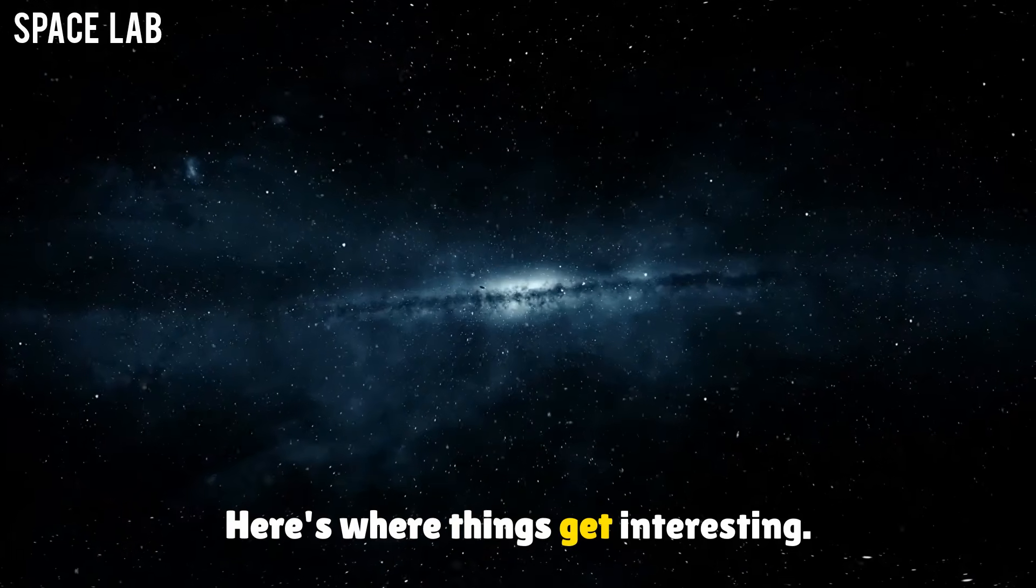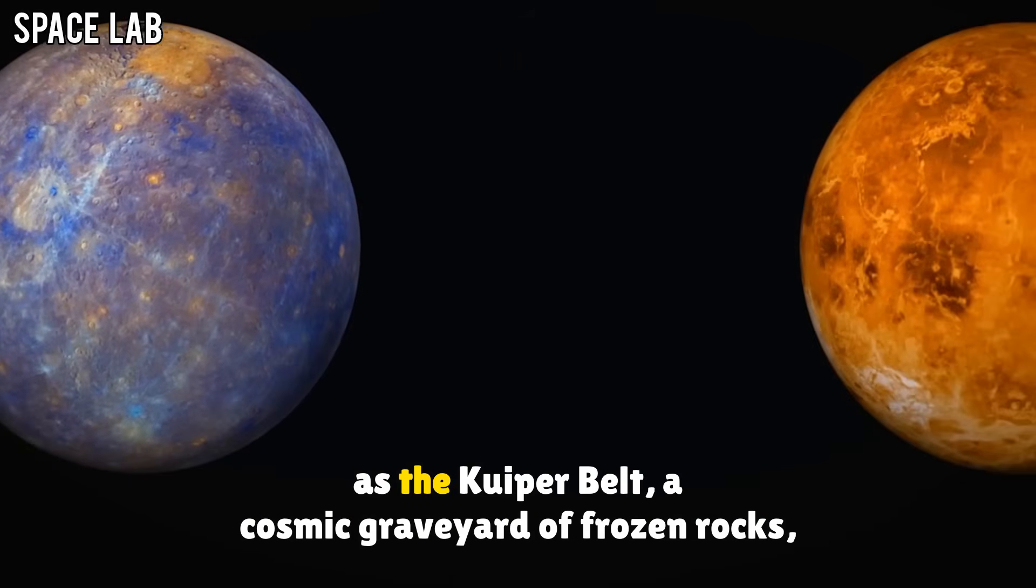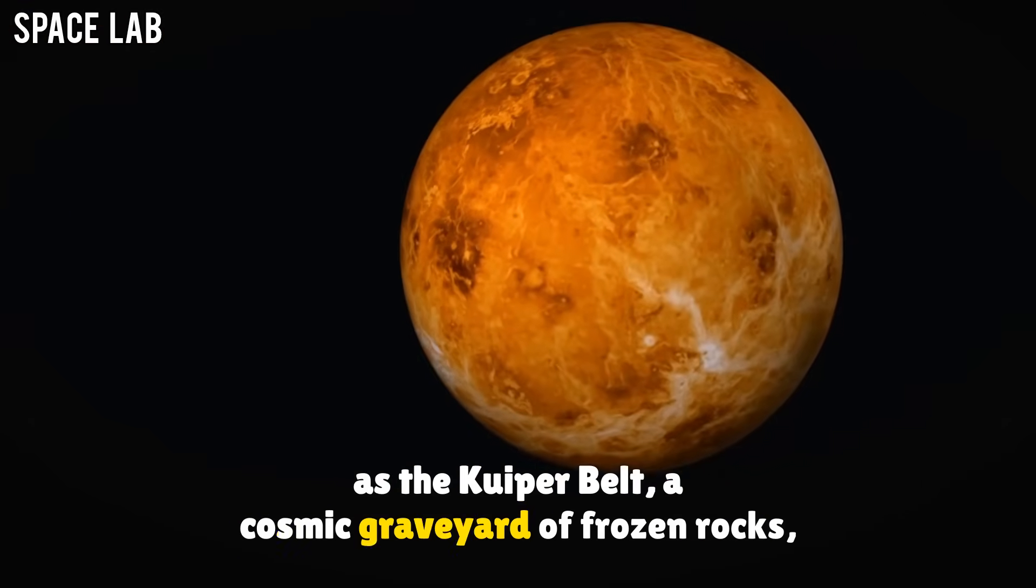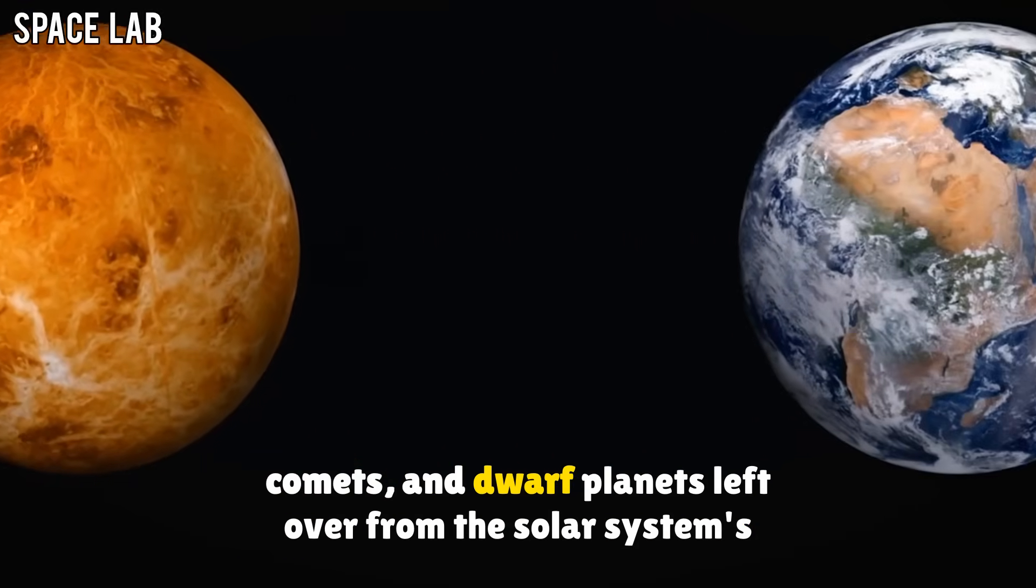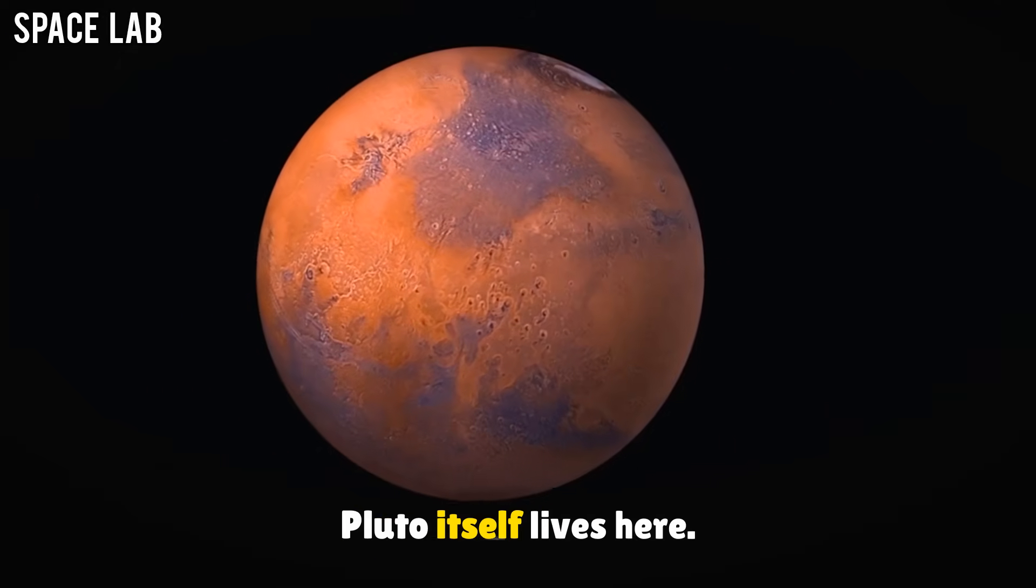Here's where things get interesting. Neptune orbits in a region teeming with icy bodies known as the Kuiper Belt, a cosmic graveyard of frozen rocks, comets, and dwarf planets left over from the solar system's birth.